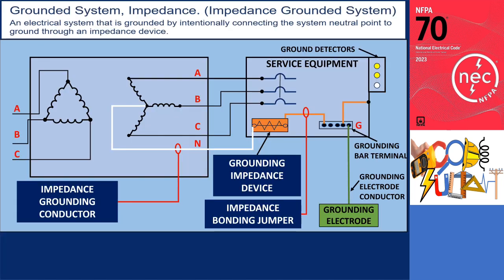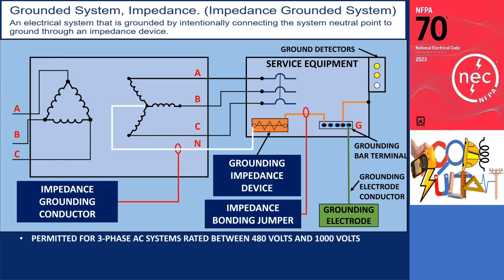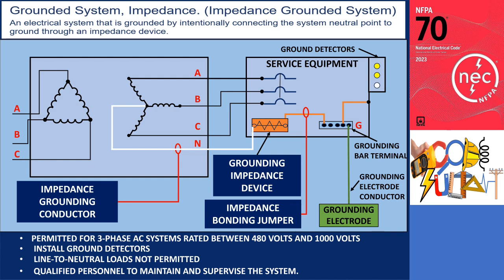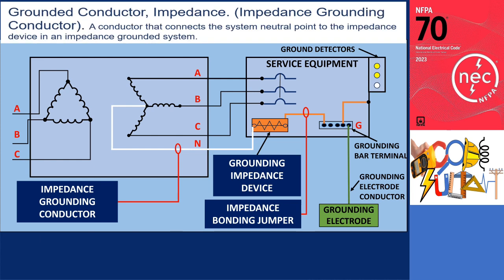An impedance grounded system refers to an electrical system where the system's neutral point is intentionally connected to the ground through an impedance device, typically referred to as a high impedance grounded neutral system. The illustration showcases a typical connection of an impedance grounded system where the neutral point is linked to the ground through an impedance device. This system is only permitted for three-phase AC systems rated between 480 volts and 1000 volts. Additionally, specific conditions must be met, including the installation of ground detectors, the prohibition of line-to-neutral loads, and the requirement for qualified personnel to maintain and supervise the system. The impedance grounding conductor is defined as a conductor that connects the system's neutral point to the impedance device in an impedance grounded system.